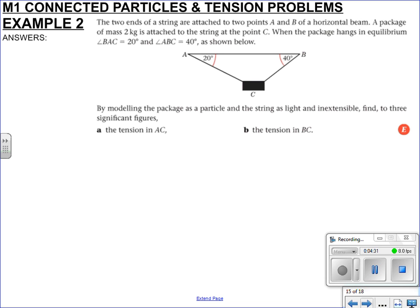Second situation. We've done this kind of thing before, but let's make sure we understand what's happening. Two ends of a single string are attached at A and B of a horizontal beam. A package of mass 2 kg is attached. As we know, 'attached' means the string is in equilibrium, but the tension forces are not going to be equal. So if that's T2, this one is T1, and you've got your mass 2 kg, so your weight is 2g here.